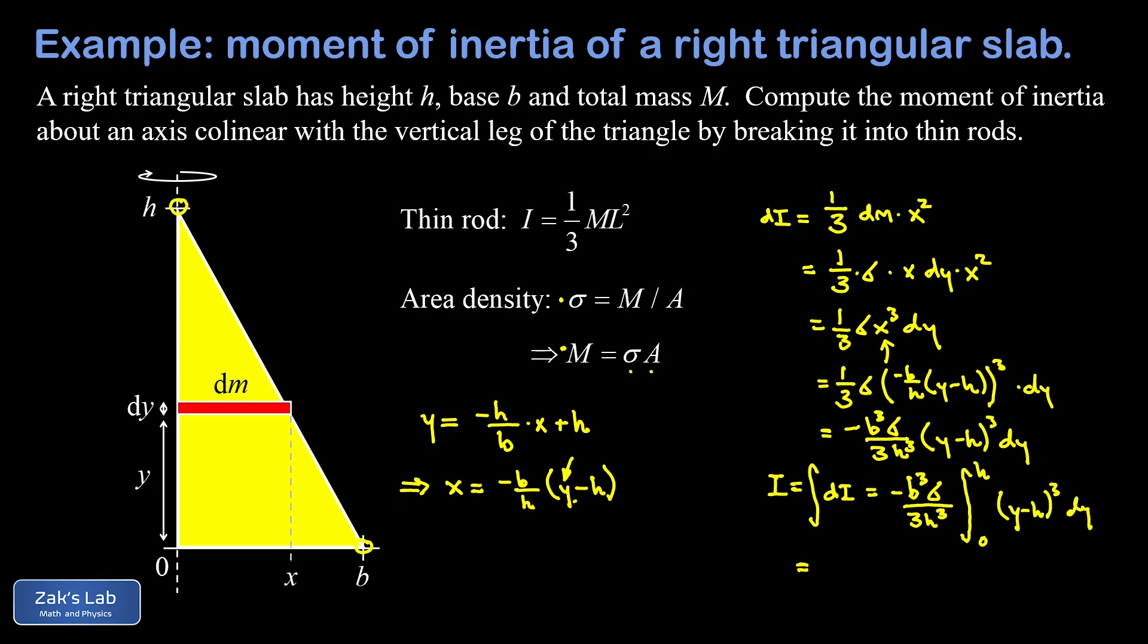That integral is unremarkable. When I integrate (y minus h) to the third, I just get one fourth (y minus h) to the fourth. Let's move that factor of 4 in the denominator out with our constants here, and I end up with negative b cubed sigma over 12 h cubed times (y minus h) to the fourth power evaluated from zero to h.